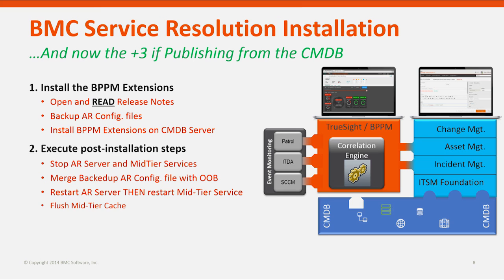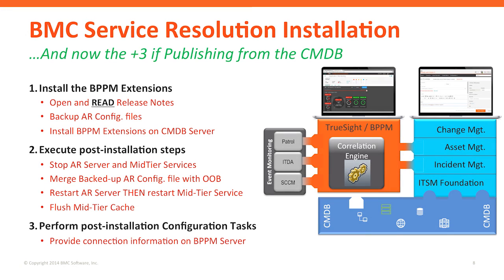Once you have that merged file together, put it back in place, then start the AR server back up so that it will read in all that information. Make sure that the AR server is fully back up, running, and accessible. Then start up your mid-tier servers. Once that's done, you'll go to the mid-tier, flush the cache, and then you'll be able to go over and provide the connection information for the CMDB in order for it to start publishing information into the TrueSight Event Management system.